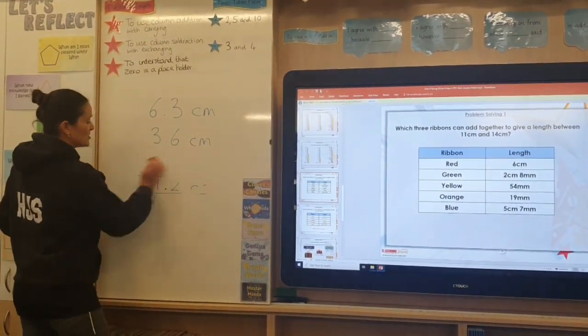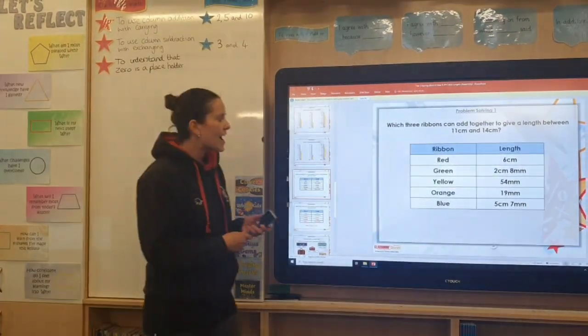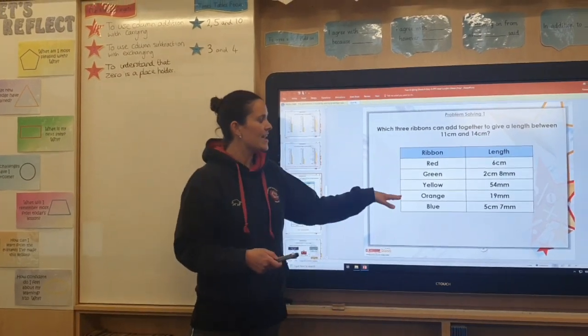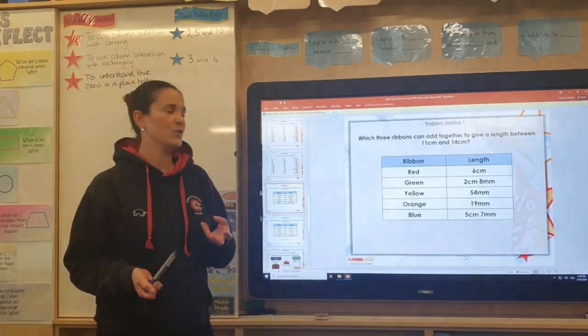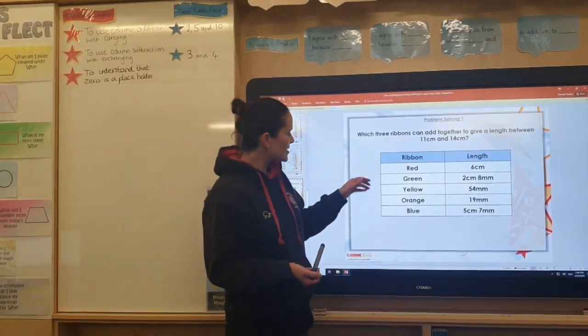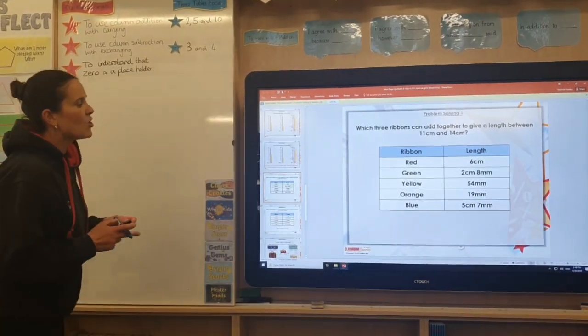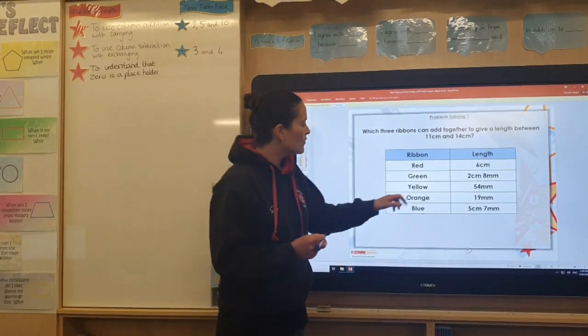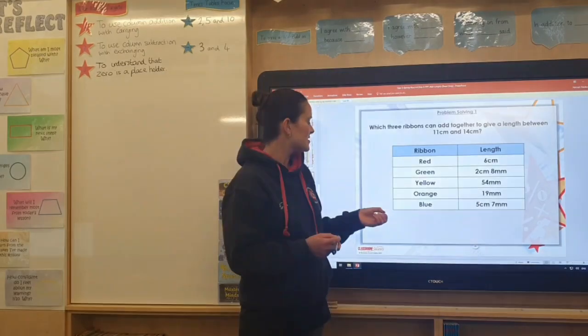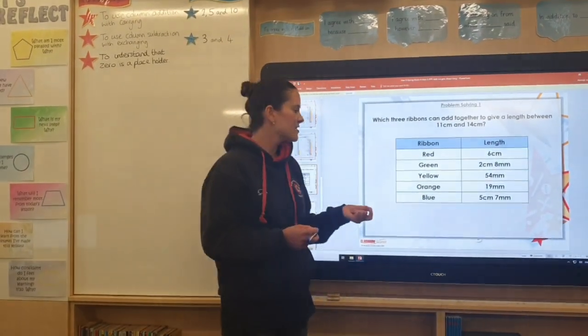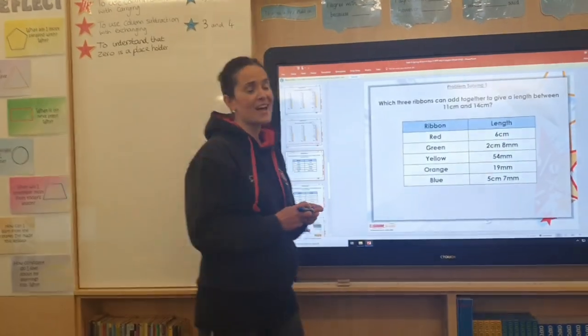One thing to do before you start, like we talked about previously, would be to make sure when you are adding up the different lengths that they are all in the same unit of measure to make it easy for yourself. For example, if I were to add up the yellow, the orange and the blue, I've got two of those measurements are already in millimetres. The yellow is 54 millimetres and the orange is 19 millimetres. So I would probably turn the blue measurements into millimetres as well.